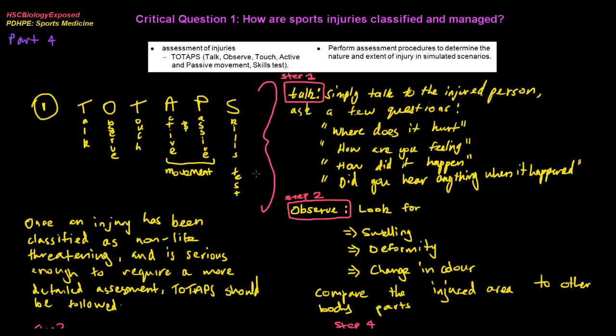We're talking about injuries which happen on the field and when it's not fatal. We're looking at toe taps. Toe taps is a strategy, almost like a procedure, similar to RISA, but RISA is specific to soft tissue injuries. Toe taps is not really specific to any type of injury, it's just generally any injury. It's an acronym that stands for TALK, Observe, Touch, Active and Passive Movement, as well as Skills Test. I'll be going through every single component inside toe taps in this lesson.